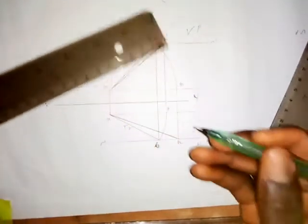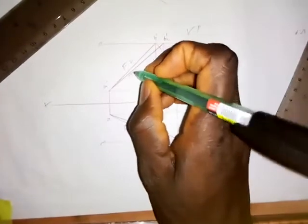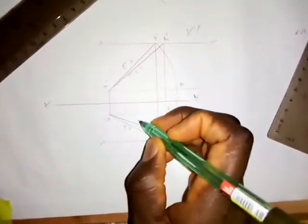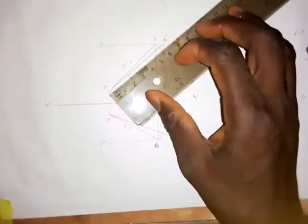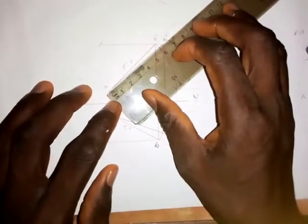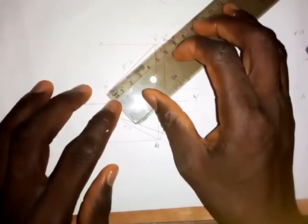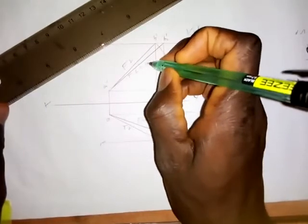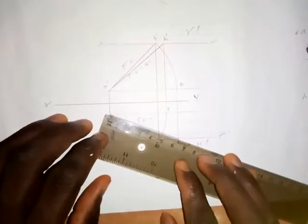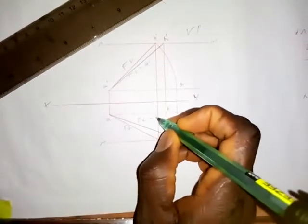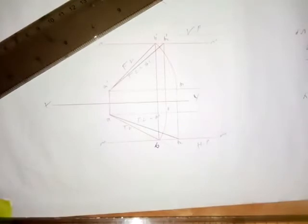Now we have answered that question. This is the true length, and this is also the true length. If you are asked to measure the true length of the line, the measurements must be equal. By this construction, the true length is 61 millimeters — both are equal to 61 millimeters.